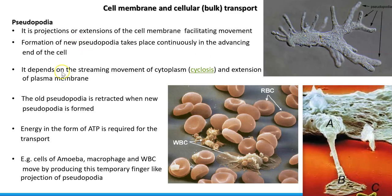The old pseudopodia will be retracted when new pseudopodia are formed — the old pseudopodia are taken inside and new pseudopodia are formed at the front in the direction the cell is moving. For this process of pseudopodial formation, energy is required in the form of ATP.